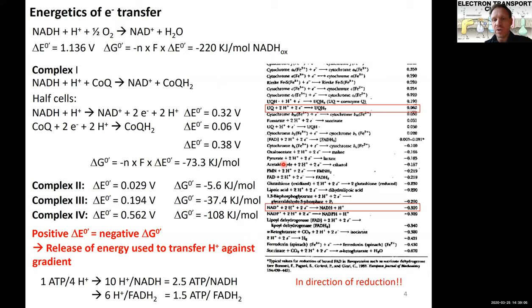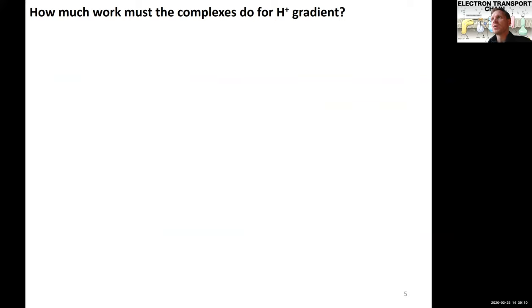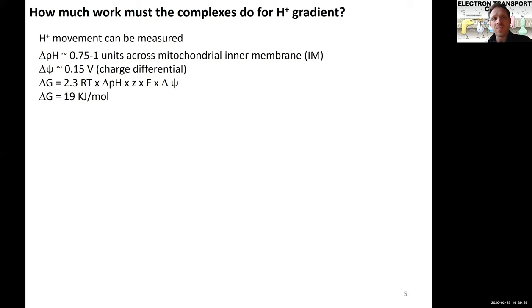So the next question is that we know now how much energy has been released. That's great. We had seen that it is exergonic, but how much work do these complexes actually have to do to pump protons? Are we making enough, in essence? And so again, proton movement actually can be measured, and there are a couple of units that we need to look at here. So we need to look at the relative pH, so the gradient of pH of moving protons. And so this has been measured as about 0.75 to 1 units across a mitochondrial inner membrane, or IM. Another value is the charge differential that we have to look at that also has been measured, and is the Δφ here at 0.15 volt. Again, you don't have to remember these values, but we will use them now to understand how much energy we actually need.